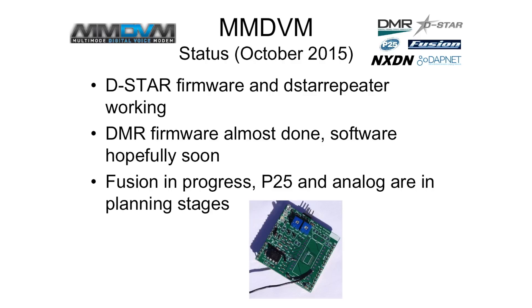This is one of the slides from my presentation in 2015. We had D-Star working — I did a little demo where he connected to one Charlie or something during the talk. Jonathan had some parts of DMR working but it wasn't quite there. He had also started down the path of Fusion, and P25 and analog were being considered. Analog still isn't a full part of MMDVM. What people have been asking for is the ability to use an analog radio into one of the modems, have the AMBE audio compression done, and then push it out into the preferred digital mode. We're not there yet.